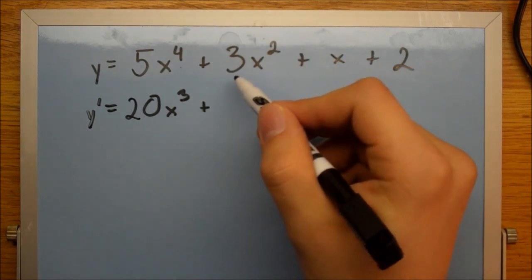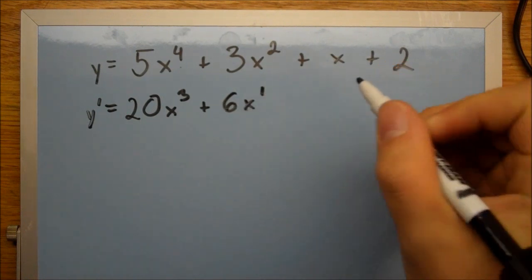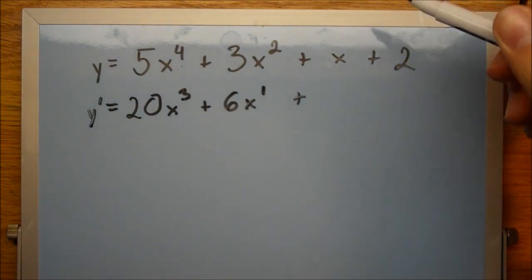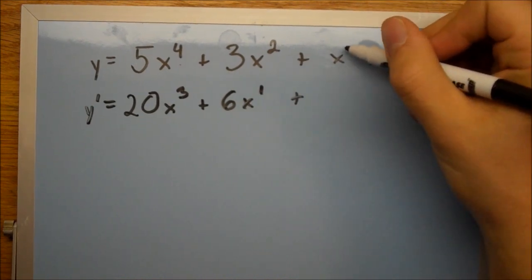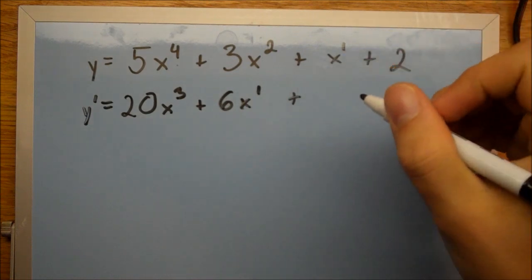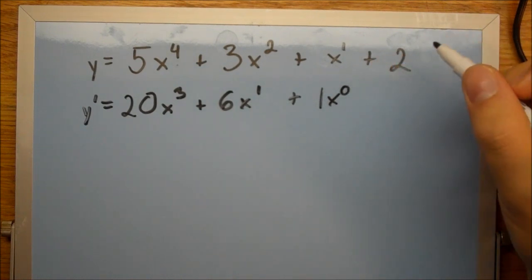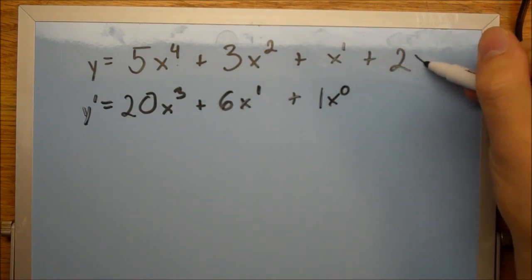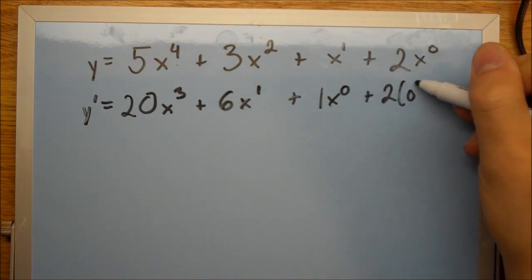Then we have 3 times 2 is 6 and x to the 1. And then here we technically have a power of 1, so 1 times 1 is still just 1, and then we have x to the 0. And here technically we have an x to the 0, and 0 times 2 is going to be 0, so here we just have 0.